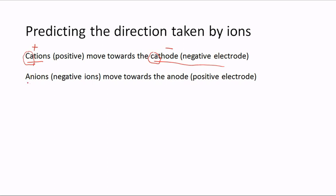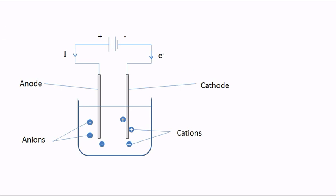The negative ions — the anions — move towards the anode, which is the positive electrode. In a simple electrolysis diagram, the anions drift towards the anode and the cations drift towards the cathode, illustrating the movement of ions through the electrolyte.